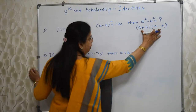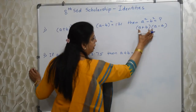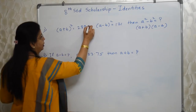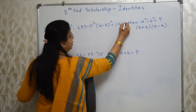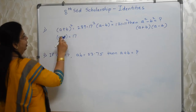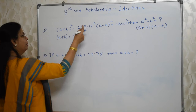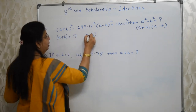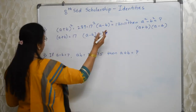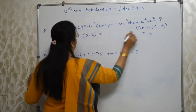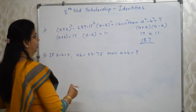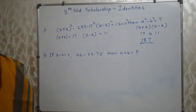Can we get the value of a² − b² from this? Yes! Substituting: a² − b² = (a+b)(a−b) = 17 × 11 = 187. So our answer is a² − b² = 187.